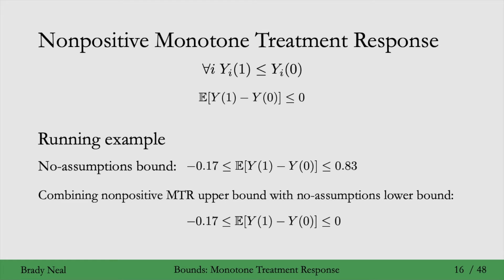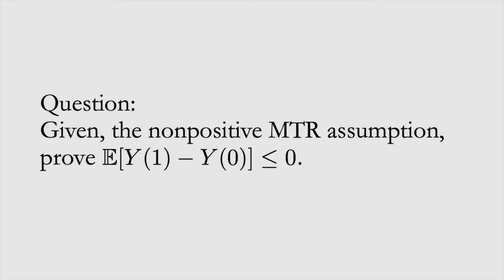I didn't prove the upper bound on the ATE here like I did on the last slide, and that's the question you have for the end of this section: given the non-positive monotone treatment response assumption, prove that the ATE is upper bounded by 0.